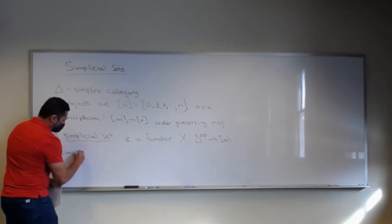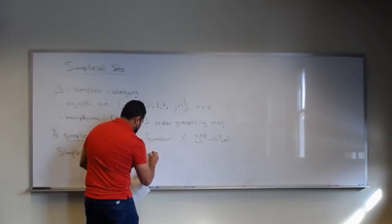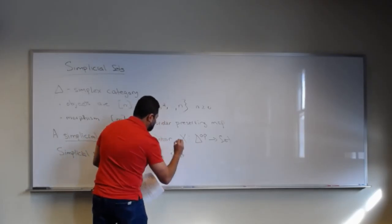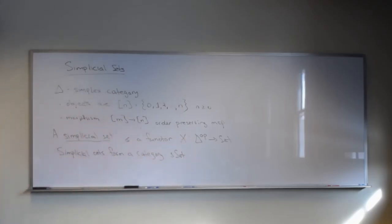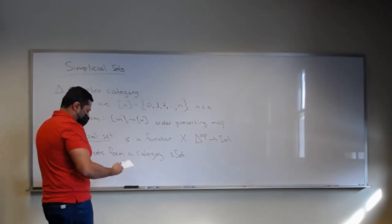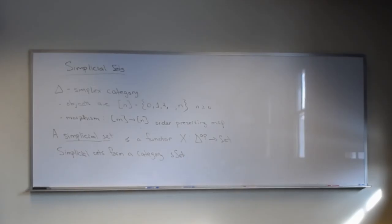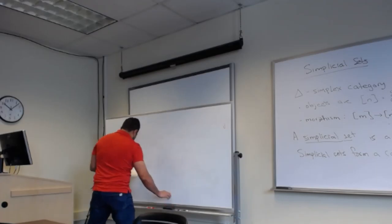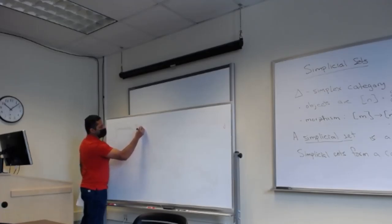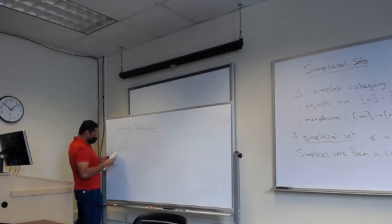Simplicial sets form a category — let's call it S-Set. The objects are simplicial sets and the morphisms are natural transformations. An important idea here is geometric realization, which Luke and Amari talked about two weeks ago. So there's a way to see these things as spaces, but there is a cost to this.